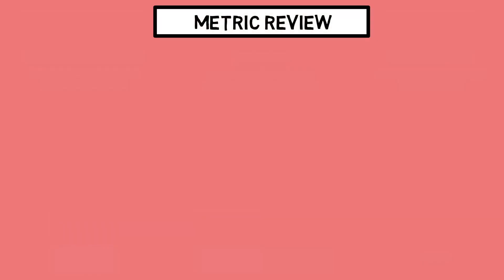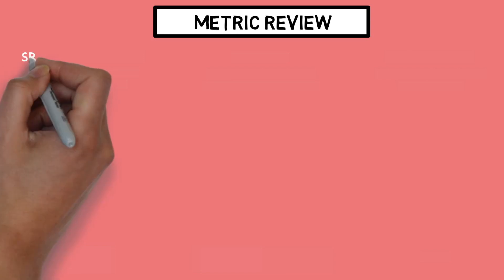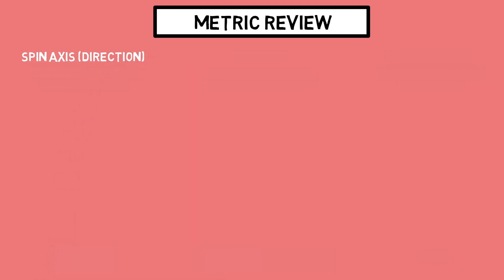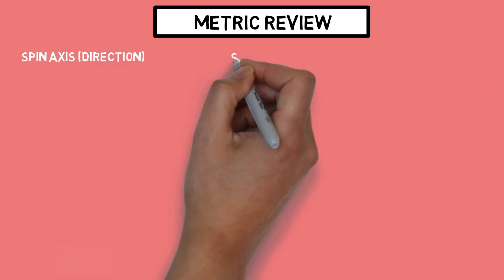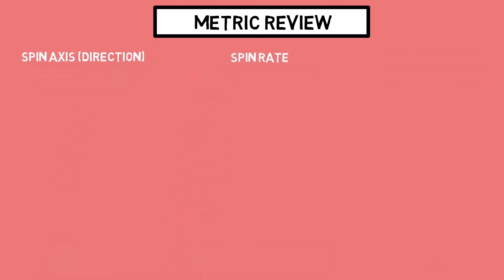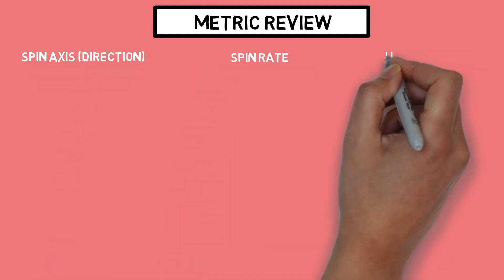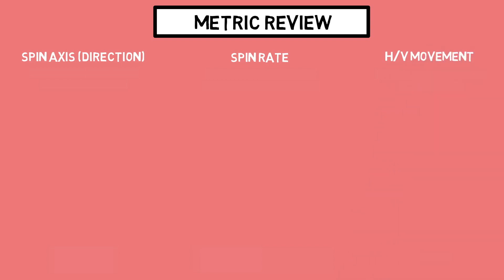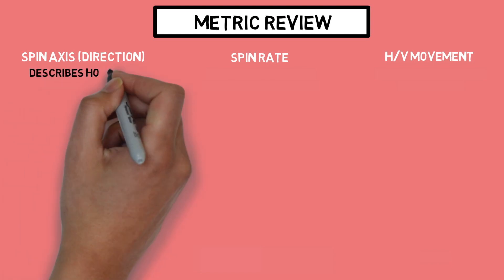Before we jump into this video, we are going to need to cover a few key metrics. I've done videos on all of these topics in the past, so if you want an in-depth dive on any of the things we talk about today, take a look down in the description. Today, we're going to be covering spin axis or direction, spin rate, and horizontal and vertical movement. Since we have covered these metrics extensively over the lifetime of the channel, I'm going to keep these descriptions short and sweet.